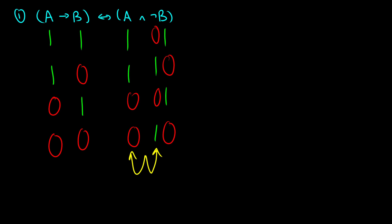Now I'm going to do AND, which takes information from the A and ¬B columns. Remember, AND is only true when both values are true. So 1, 0 gives us 0; 1, 1 gives us 1; 0, 0 gives us 0; and 0, 1 gives us 0. It's only going to be true in that second row.